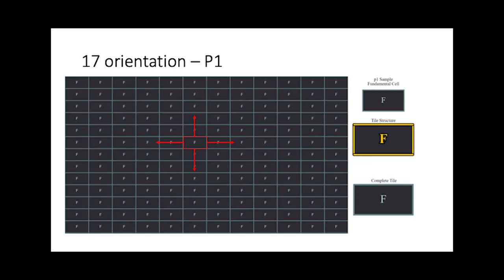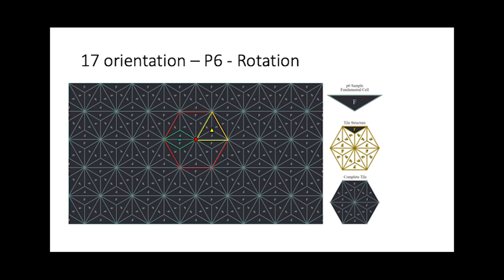First, we want to talk about the first possible orientation, which is P1, where it's only one unit tile moving in translation — up, down, left to right — in an infinite Euclidean plane. And then we can talk about rotation, where we start seeing six axes of rotation in one complete tile, where at the middle we get a complete six-order rotation, a triangle which uses third-order rotation, and a second-order rotation to form the complete tile.